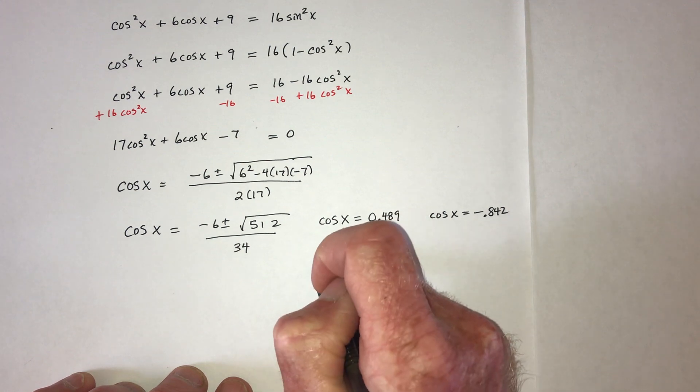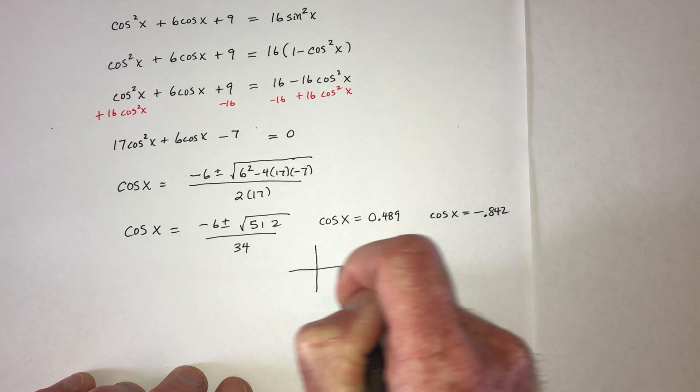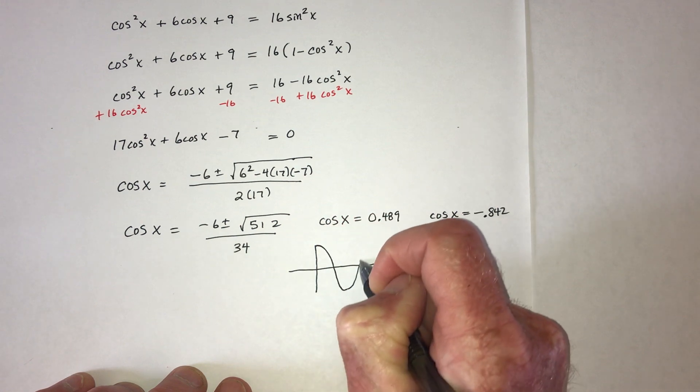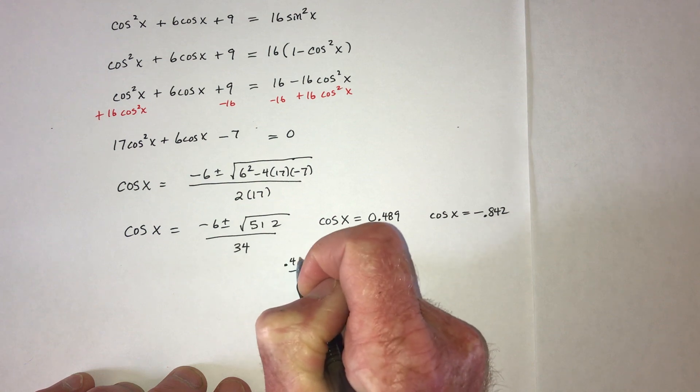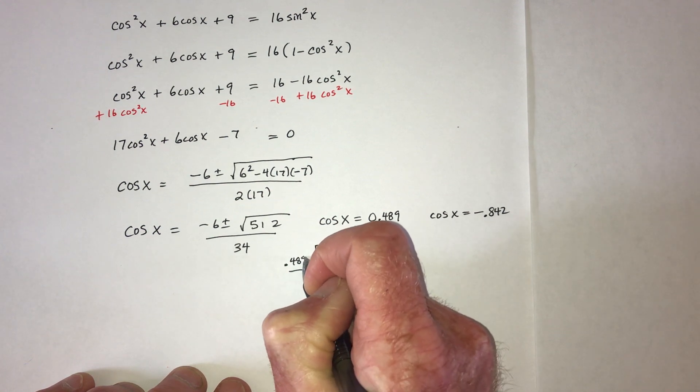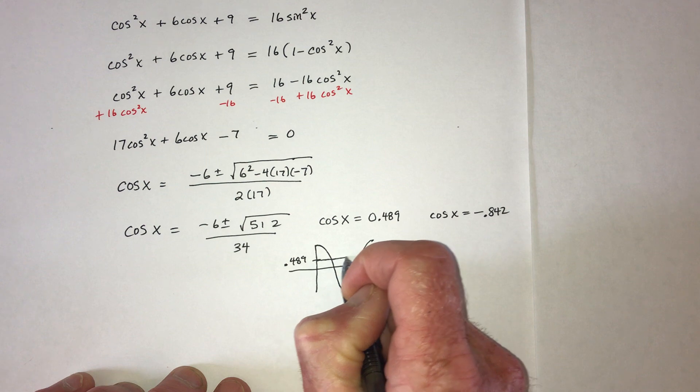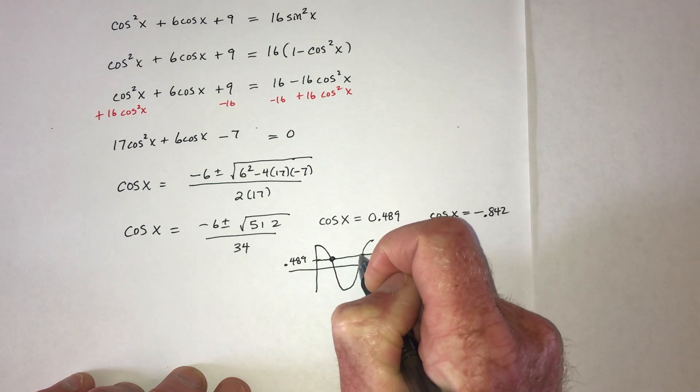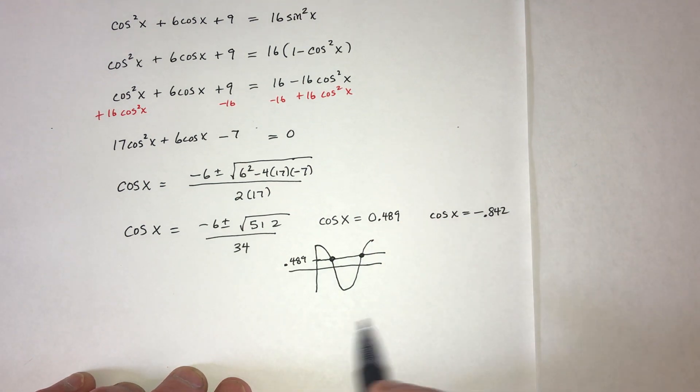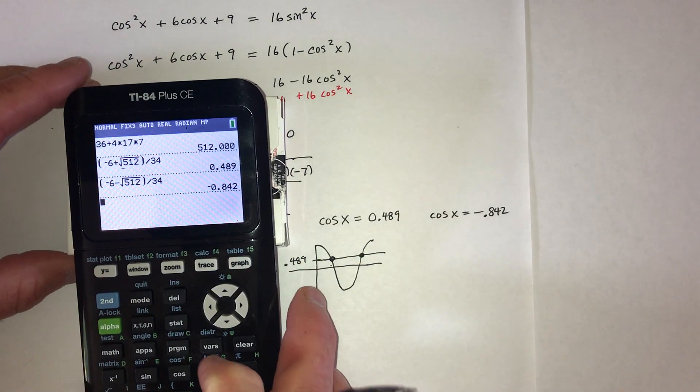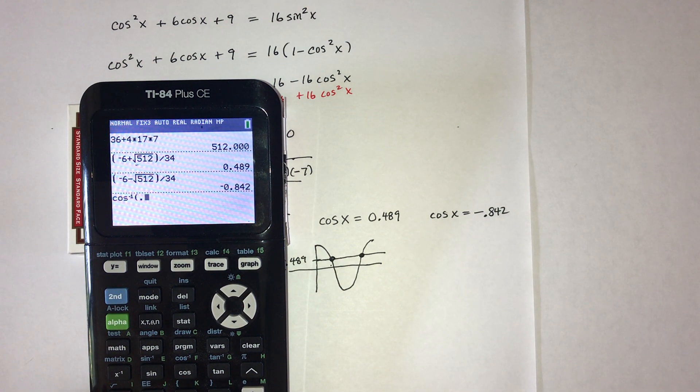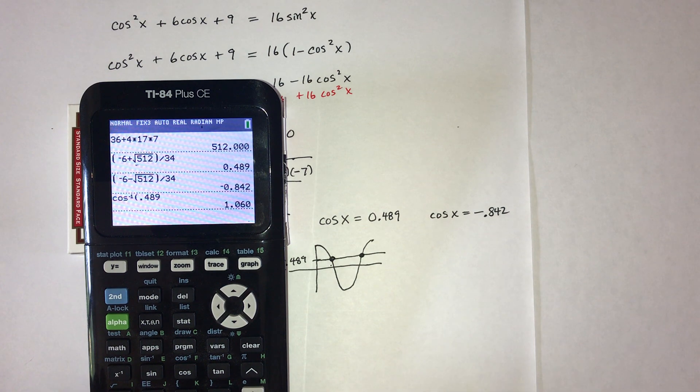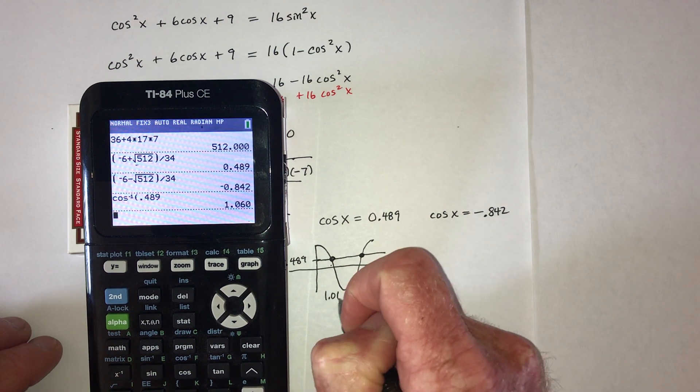So for this one, it's saying look at the cosine graph. And then when does it equal a 0.489? And when you go across, there's two answers. This first one, we can get from using cosine inverse on the calculator. So take cosine inverse of a 0.489. And that equals 1.06.